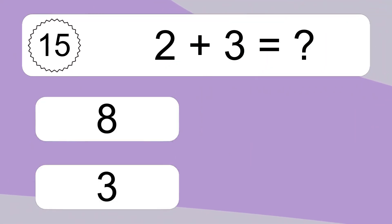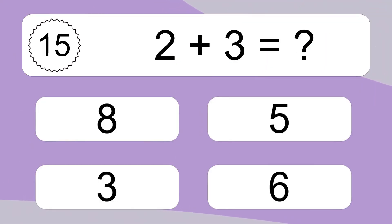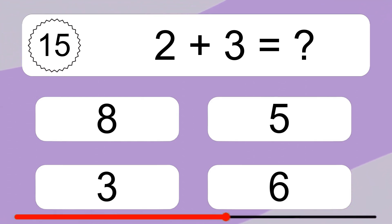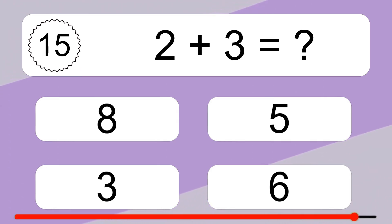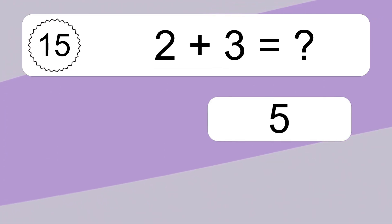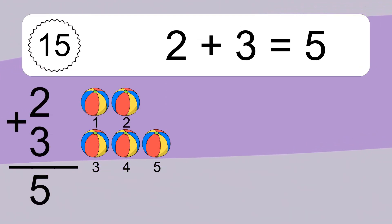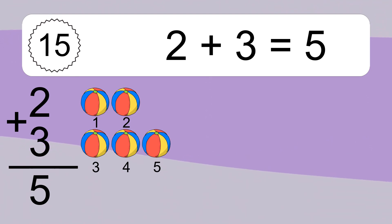2 plus 3 equals what? 2 plus 3 equals 5. Let's count it. 1, 2, 3, 4, 5.